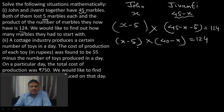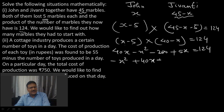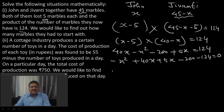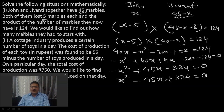Expanding: 40x − x² − 200 + 5x = 124, so −x² + 45x − 200 − 124 = 0, giving −x² + 45x − 324 = 0. Multiplying throughout by −1: x² − 45x + 324 = 0.